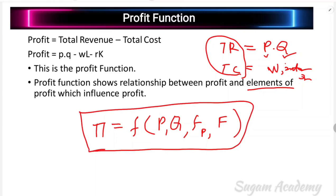Basically, the factors used — factor price and factor quantity — influence profit. If factor price is higher, it affects profit. If the price of goods produced is higher, profit goes up. The quantity of production and the factors influence profit. So the profit function shows the relationship between the profit of the firm and the factors which determine or influence the profit.